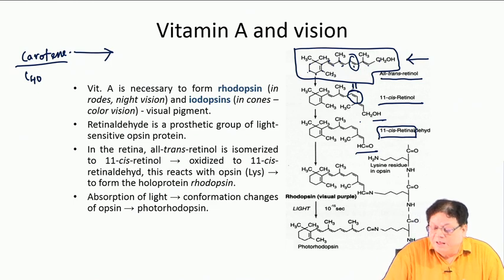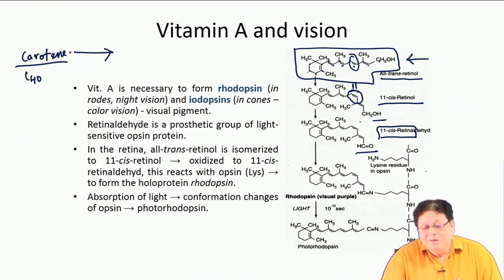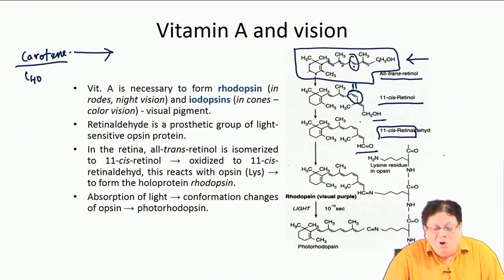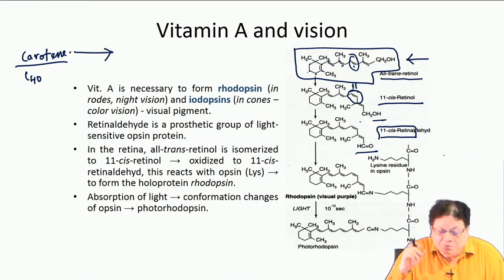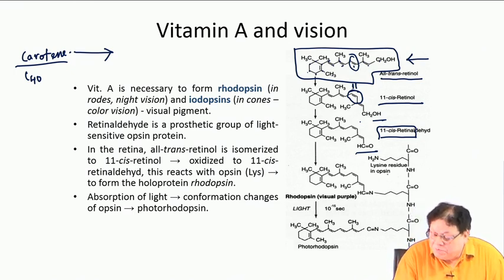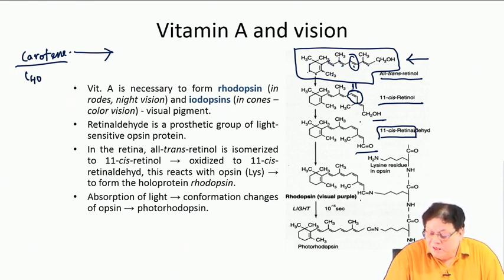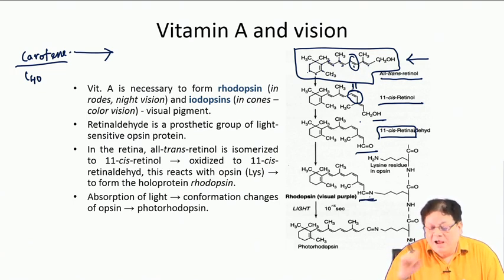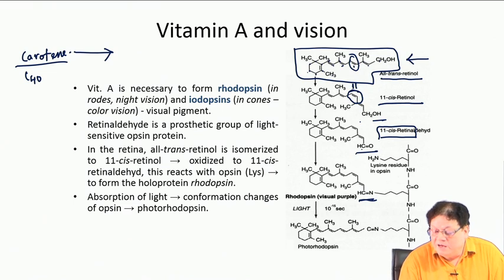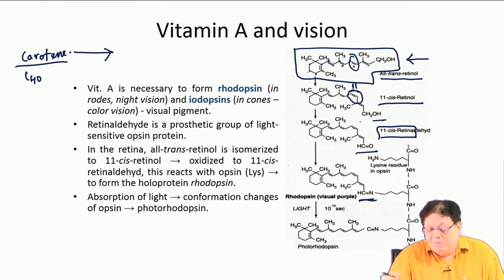There is a protein called opsin. The opsin protein has a lysine residue, and this lysine reacts with the aldehyde to form an imine. Lysine has a side-chain amine that reacts with the aldehyde and forms the imine. This complex is called rhodopsin.